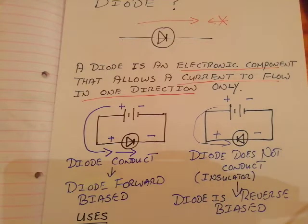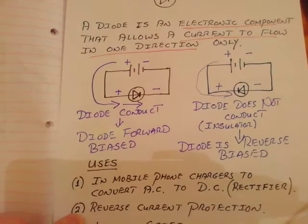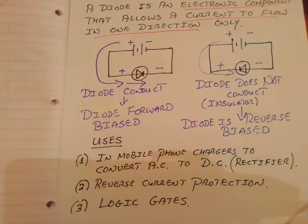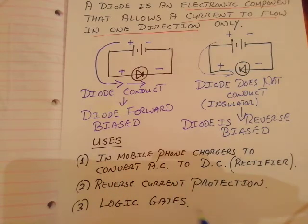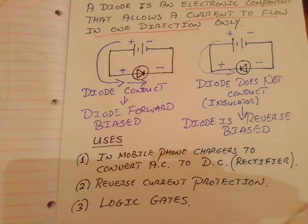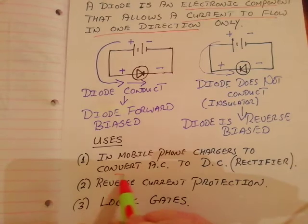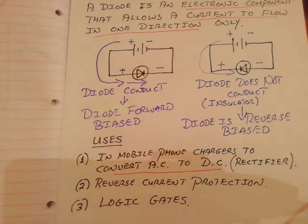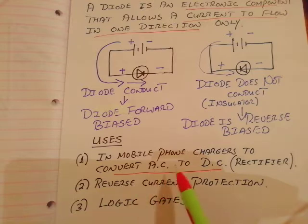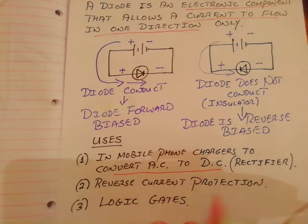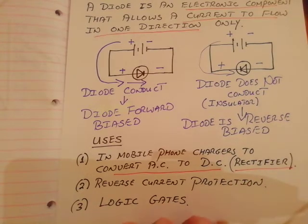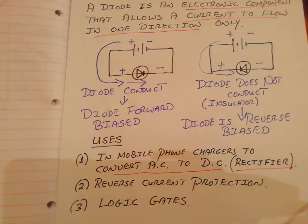That comes into the experiment. What's a diode used for? First, a diode can be used in a mobile phone charger to convert alternating current to direct current — that's one of the main uses of diodes in the world. That process, turning AC into DC, is known as rectification or a rectifier.